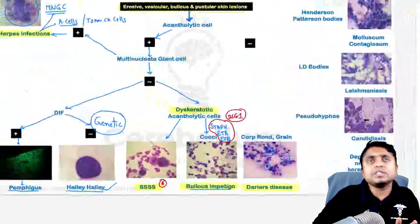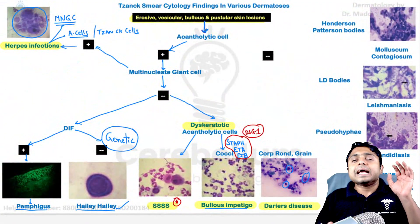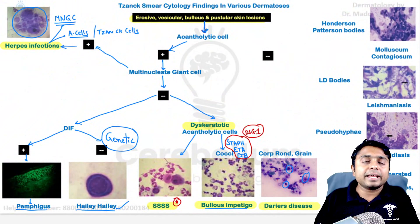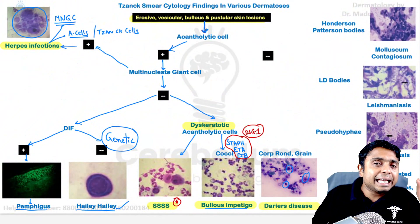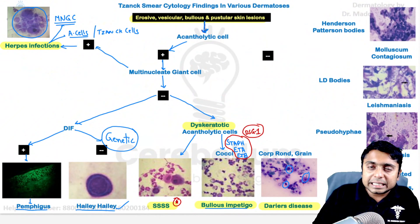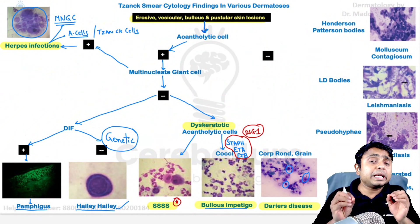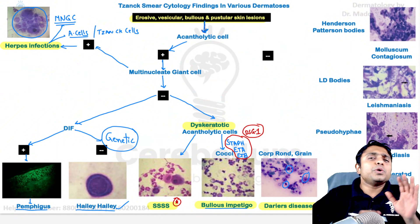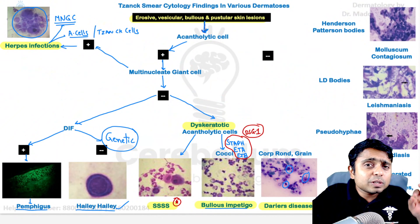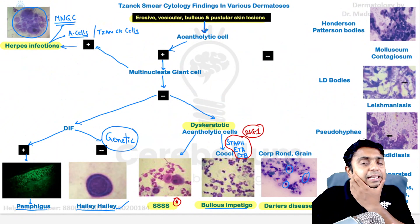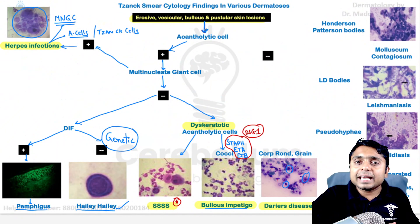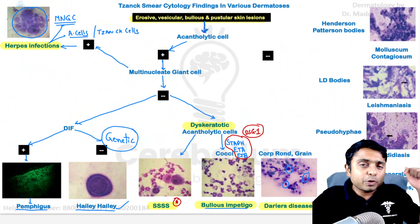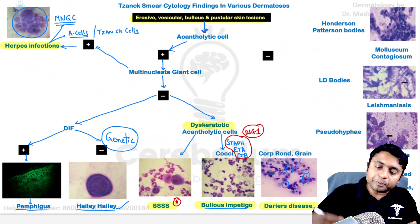This is my question for all students watching: Hailey-Hailey disease and Darier's disease are both genetic conditions, so there is going to be some defect in these two conditions. Can you name what are the ATPs associated with Hailey-Hailey as well as Darier's disease? Put your answer in the comment section below.